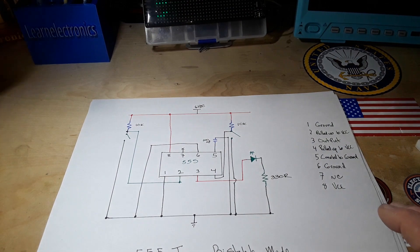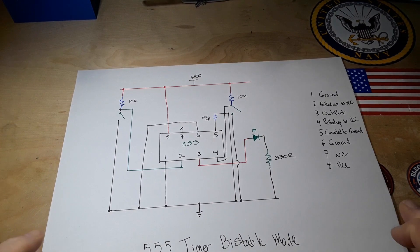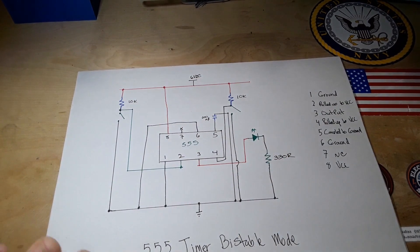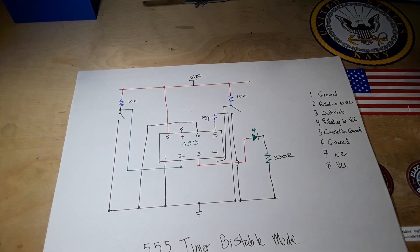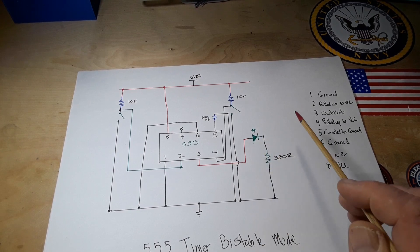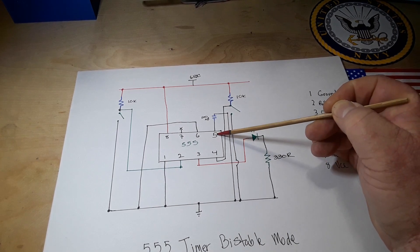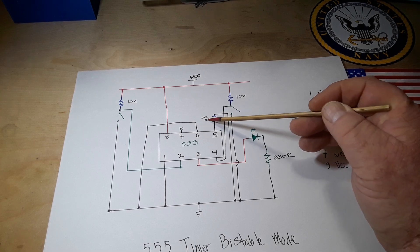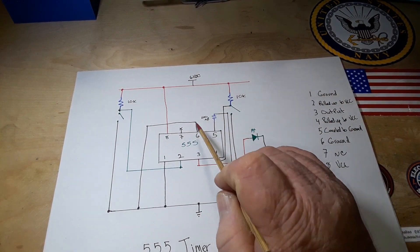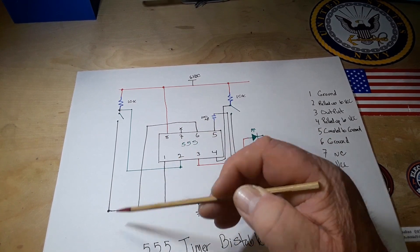Let's take a look at the circuit here and I'll do my best to explain how and why it'll work like this. Let's start with our power connections: pin 8 VCC, pin 1 is ground. Our output, pin 3, goes to a green LED through a 330 ohm resistor to ground. Pin 5, our control voltage pin, is coupled with a 100 nanofarad capacitor to ground.